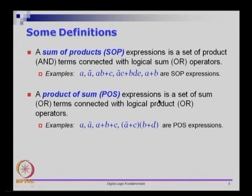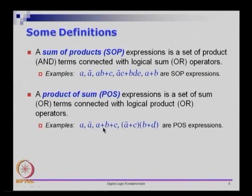A product of sums (POS) expression is a set of sum terms connected with logical AND. For example, a bar + c is a valid sum term and b + d is a valid sum term, and there is an implied AND between these two. So (a bar + c)(b + d) is a valid product of sums expression.